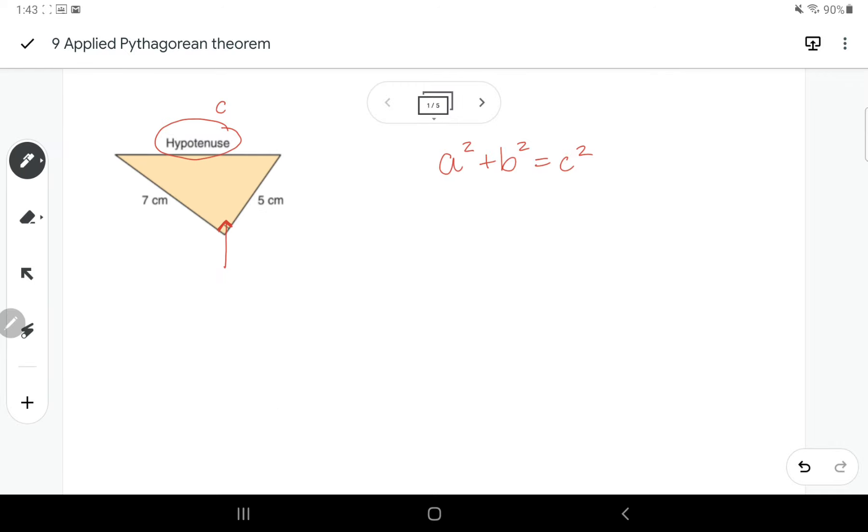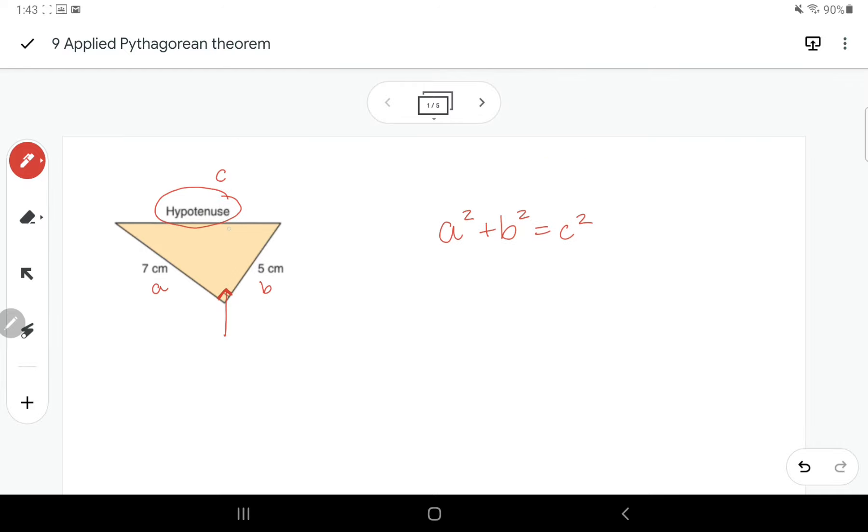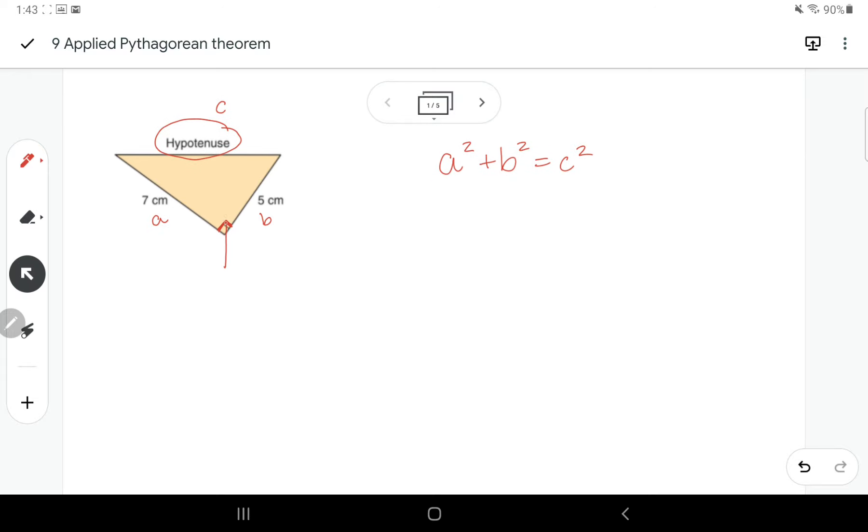So you probably remember this A squared plus B squared equals C squared equation from grade 8 math. And this is what the Pythagorean Theorem is. The other two sides don't really matter which you label A or B. But you have to make sure that you use this arrow from the 90 degree angle to get to the hypotenuse that's across from the 90.